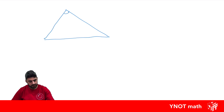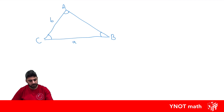Let's call the angle up here big A, the angle here big B, and the angle here big C. We're going to call the sides opposite the angles just small letters of their big letters. So the side opposite A is going to be little a, the side opposite big B little b, and the side opposite big C is going to be little c.